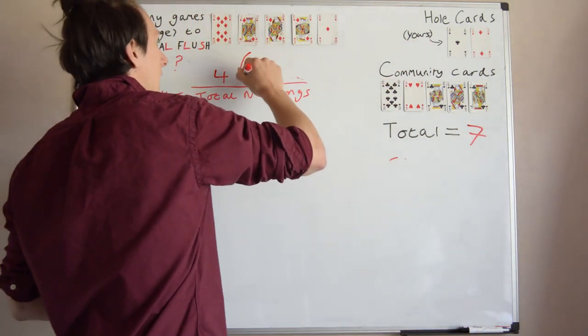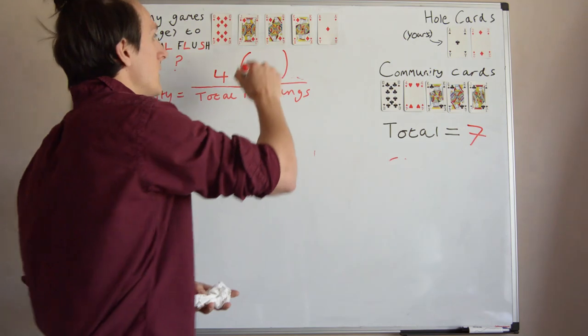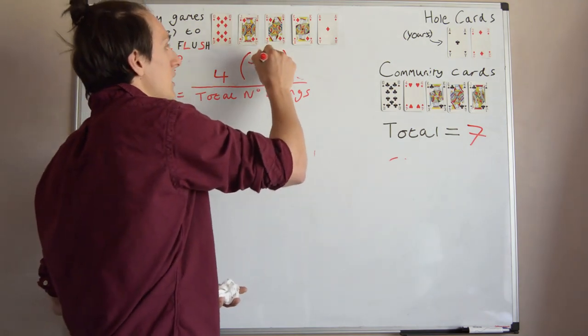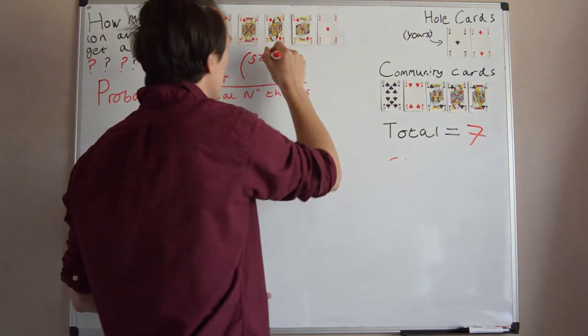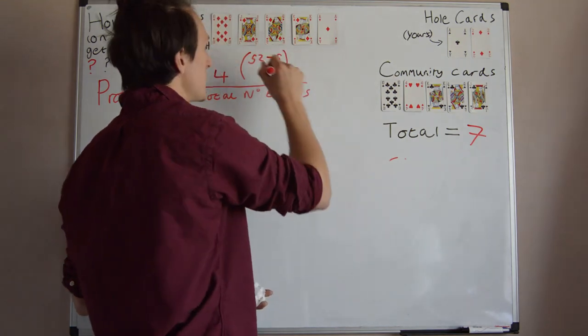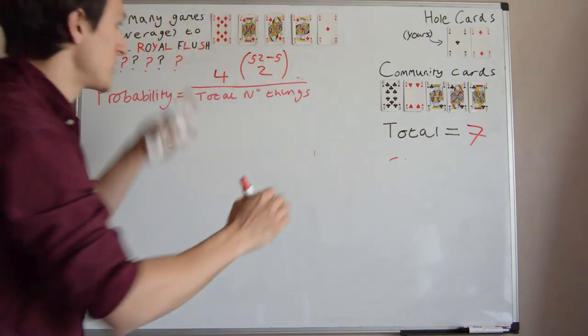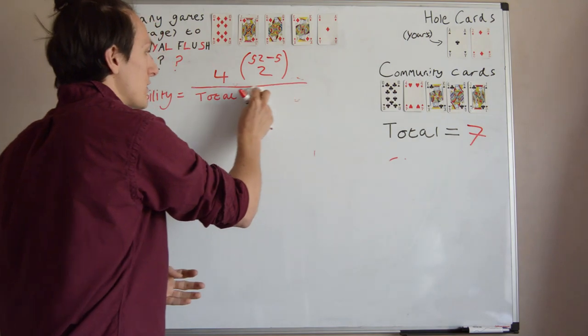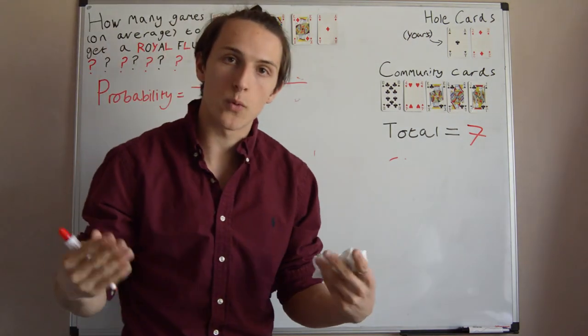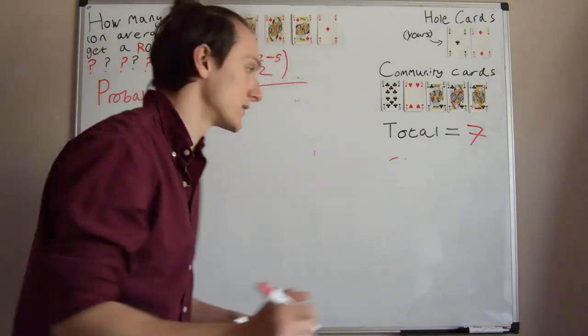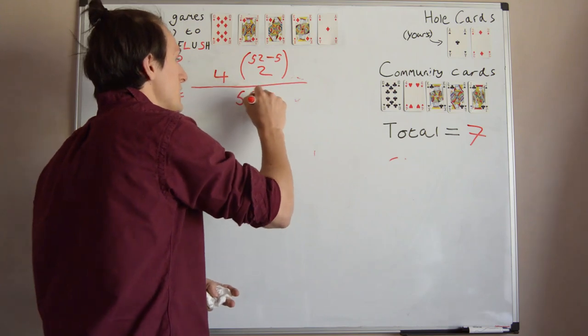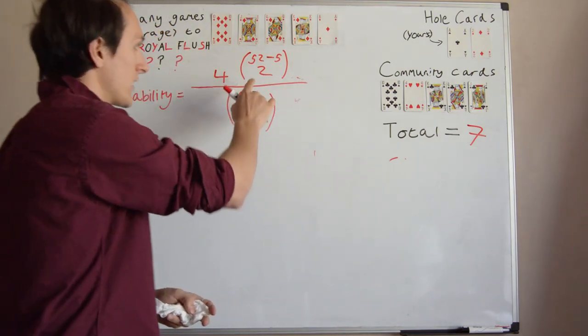Well how many things is there to choose from? Well we have 52 cards in a deck, but we've already chosen 5 to make this Royal Flush here, so we have to take off 5, and we're choosing 2 things. So that's the numerator. Well the total number of things, that's going to be the total number of ways that we can make a 7 card hand. Well we have 52 cards to choose from, and we're going to choose 7.